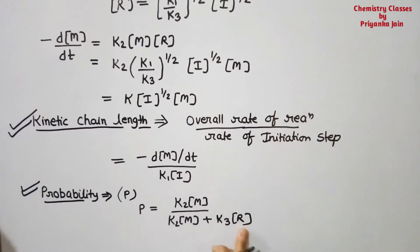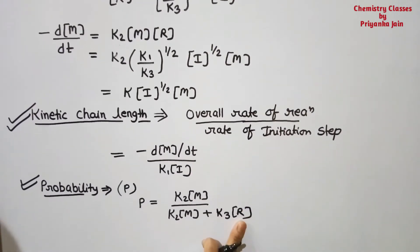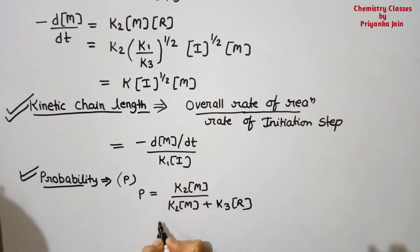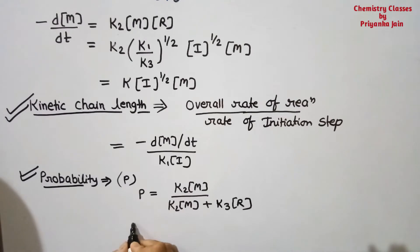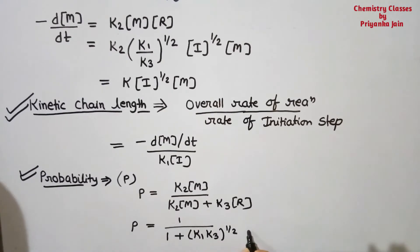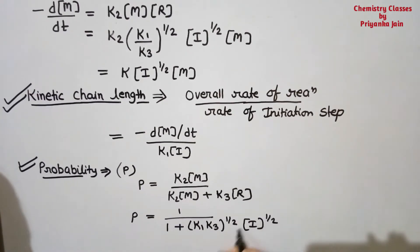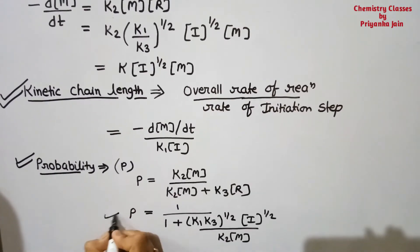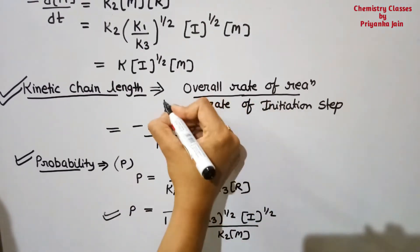Substituting the value of [R] and dividing numerator and denominator by K2[M], the probability formula becomes: P = 1 / (1 + (K1K3)^(1/2)[I]^(1/2) / K2[M]). You must learn both the kinetic chain length formula and this probability formula.